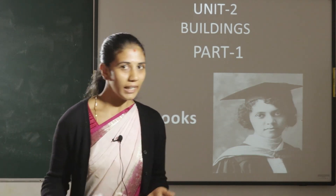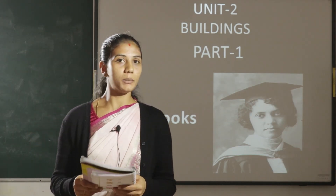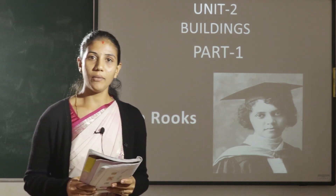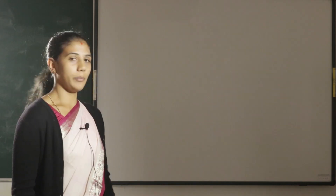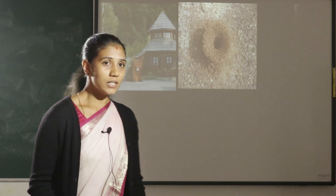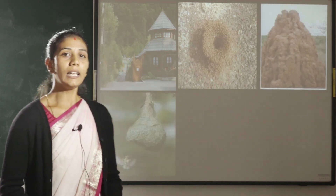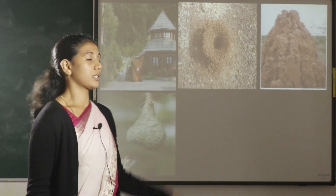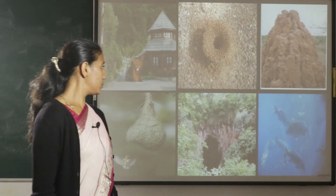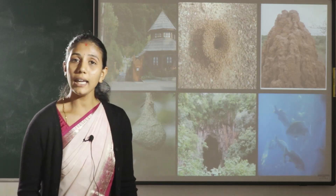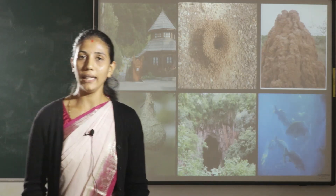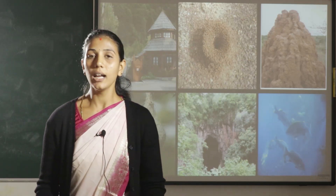On this earth, there are many kinds of plants, animals and human beings. Many animals live in different places. For example, a man lives in a house. Ants and a snake live in anthills, and a bird lives in a nest. Wild animals live in a cave, and fish lives in water. Many animals live in different places.